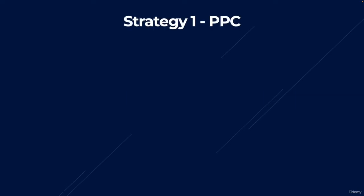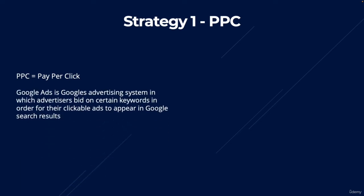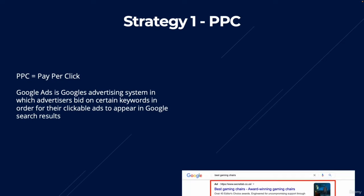The first strategy is called PPC. PPC stands for pay per click, and as it sounds, it's a marketing strategy where you pay for every click you generate. The most typical way that affiliate marketers use PPC is by using Google's ad platform called Google Ads, which is Google's advertising system where advertisers bid on certain keywords in order for clickable ads to appear in the Google search results.